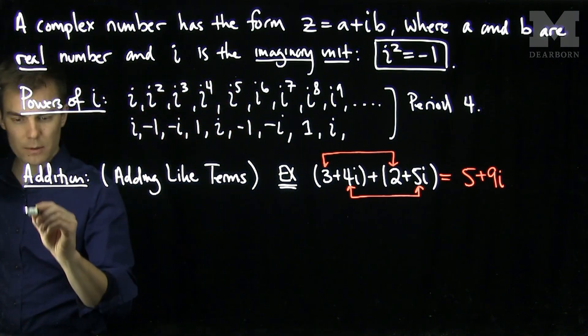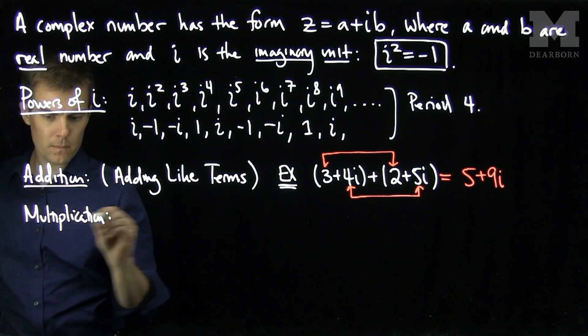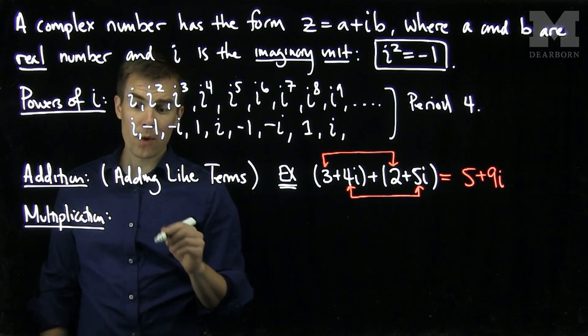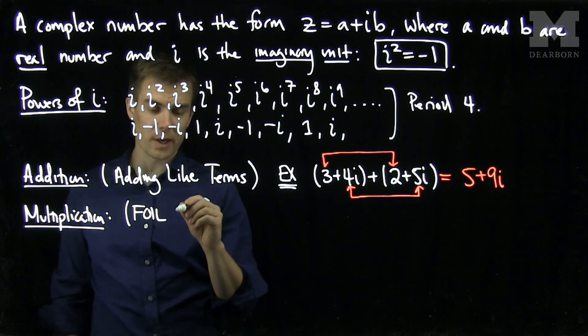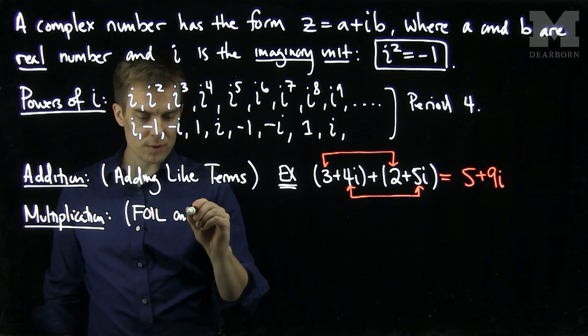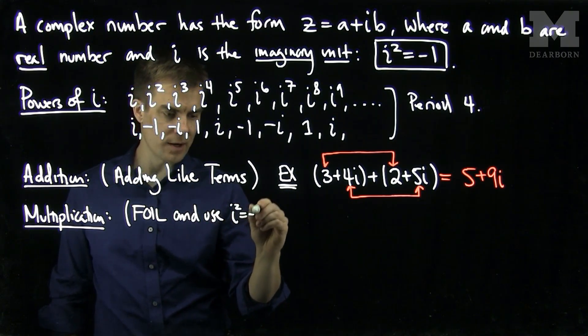Multiplication is similar. To multiply, we will FOIL as an ordinary multiplication and use the fact that i squared is negative 1.